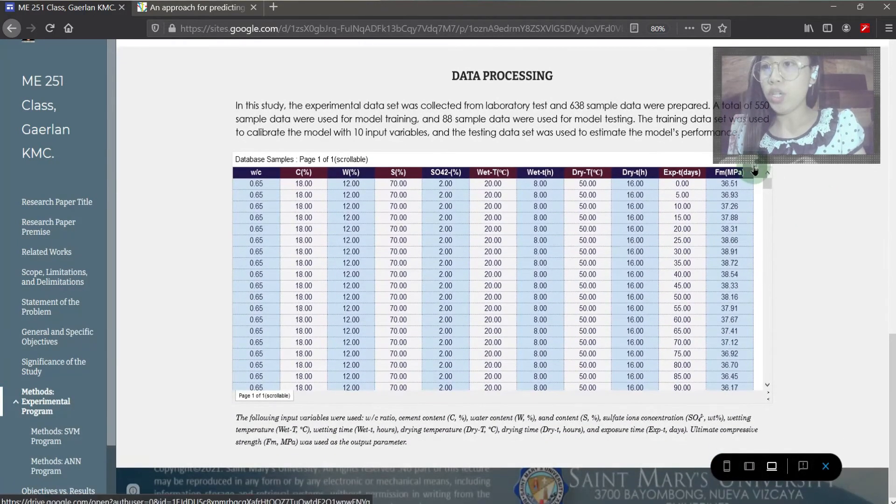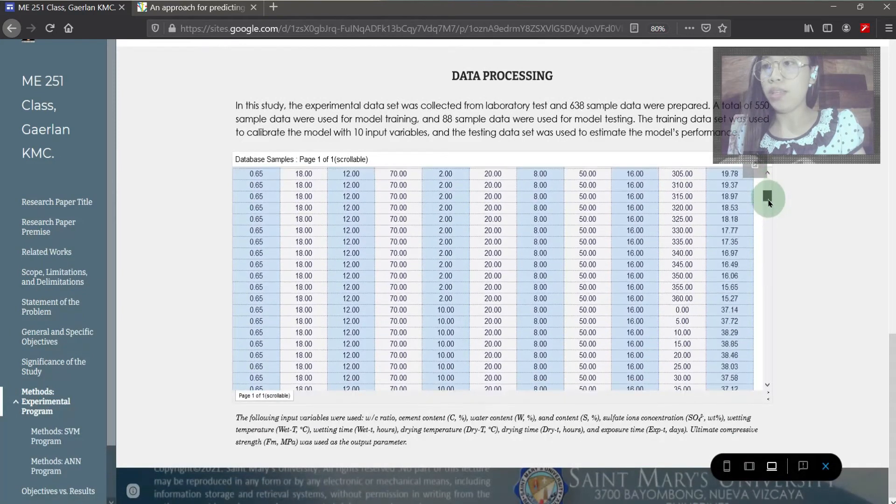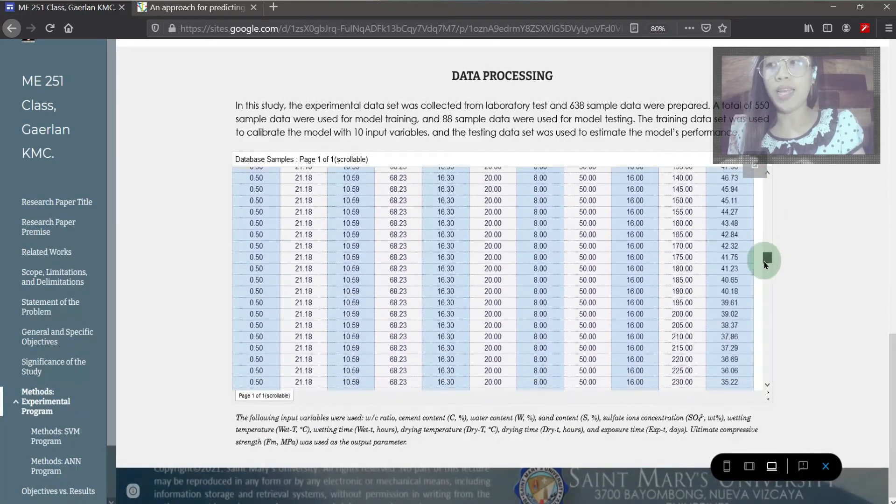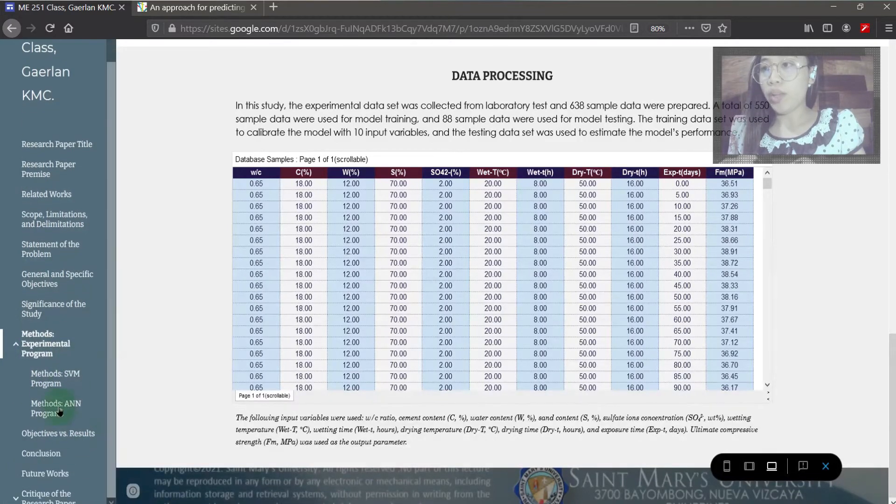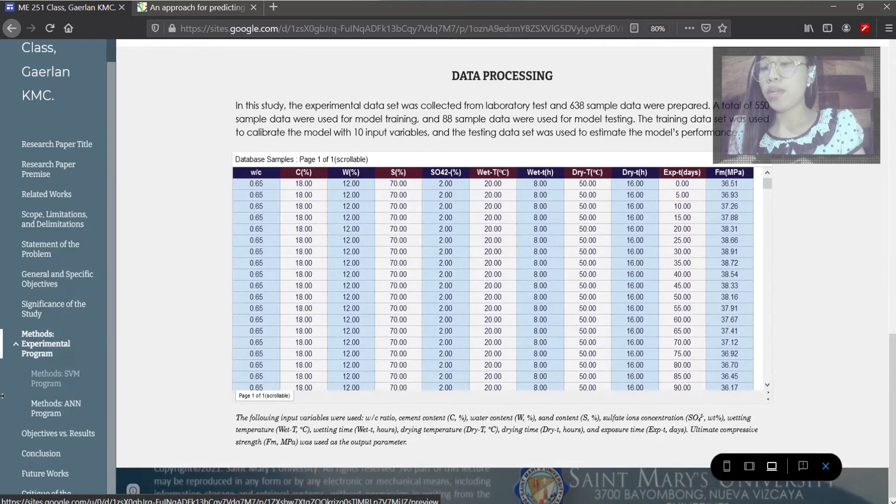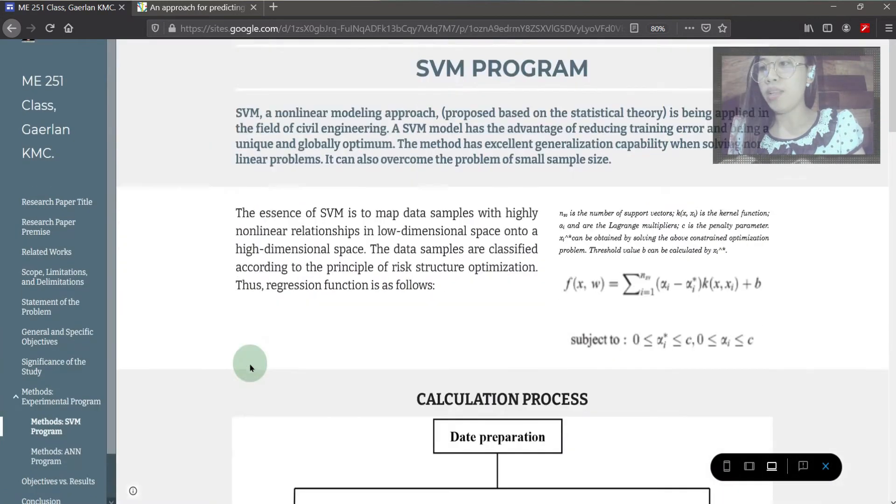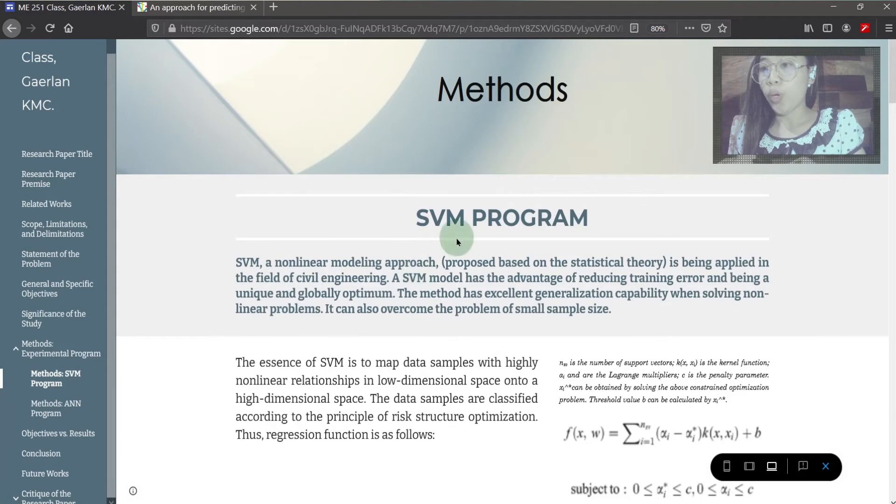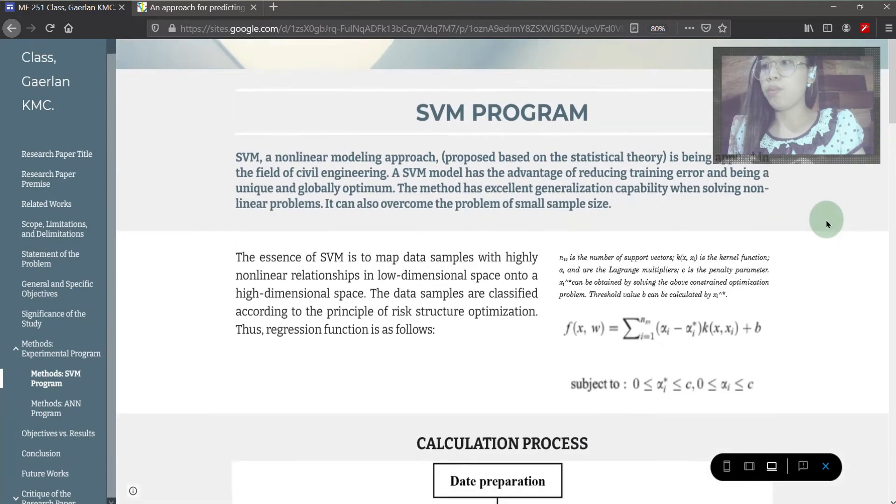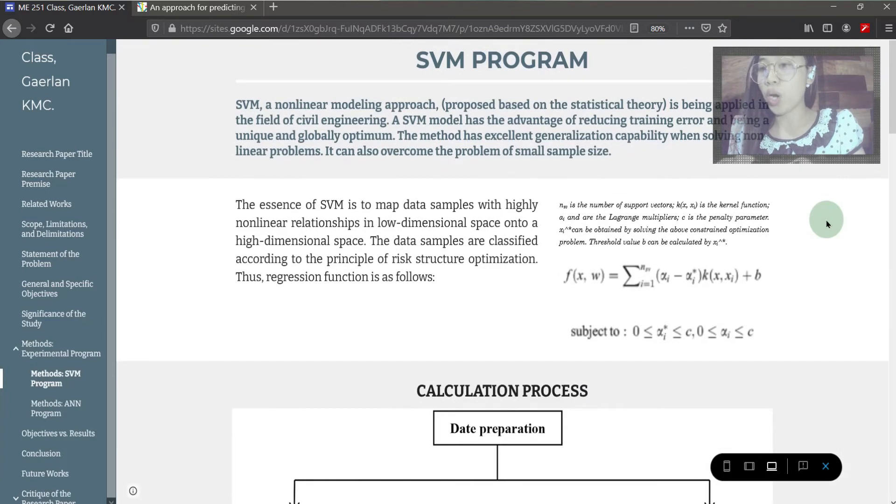Shown here is a spreadsheet of the rough experimental dataset of 638 samples. Now, for the approach on predicting compressive strength, we have two options, SVM and ANN. This will help us mapping data samples with highly non-linear relationships in a low-dimensional space where data samples are classified as per principle of risk structure optimization.